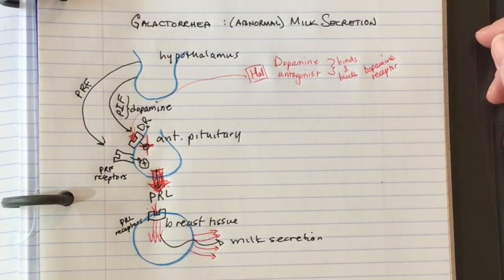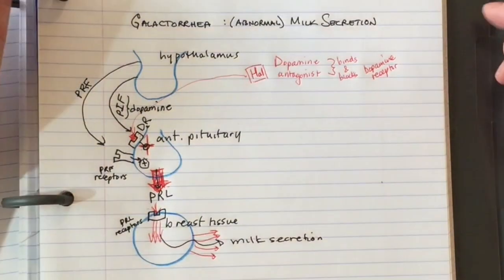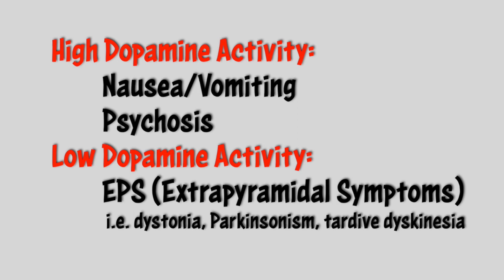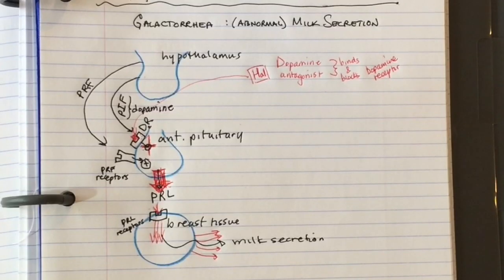The question was, is there galactorrhea in Parkinson's disease? If you have too much dopamine activity, you get nauseous and psychotic. This is a gross simplification. If you have too little dopamine activity, and dopamine activity is mediated by dopamine levels and receptor stimulation, you get EPS.